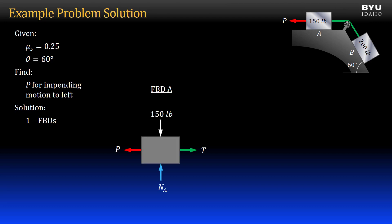For block A, I show the self-weight acting downward, the applied force P, and the unknown tension force in the cable. I also show the normal force perpendicular to the support and the friction force. Since we want impending motion to the left, the friction force will be acting to the right to resist the motion.